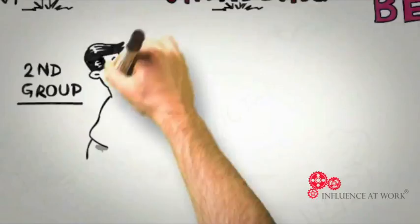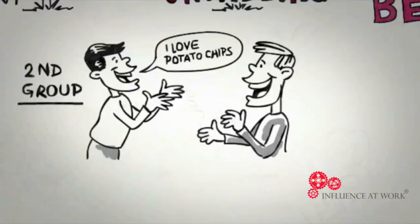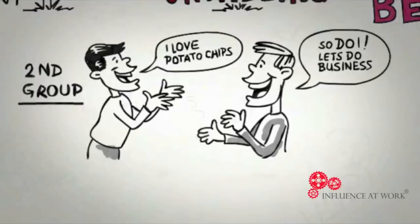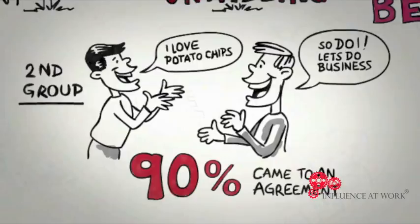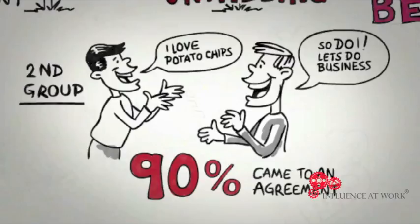A second group, however, were told 'before you begin negotiating, exchange some personal information with each other, identify a similarity you share in common, then begin negotiating.' In this group, 90% of them were able to come to successful and agreeable outcomes that were typically worth 18% more to both parties.